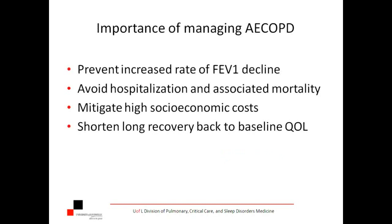Why is it important to manage acute exacerbations? We want to prevent the increased rate of FEV1 decline. FEV1 declines about 30 mL per year in the general population after becoming adults. In smokers, it declines twice as fast — about 60 mL per year. In people with COPD, some of my patients decline 300 cc per year. Every time you get an exacerbation, you take a big hit and never come back to where you were before.